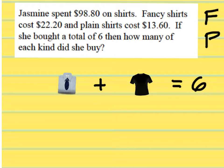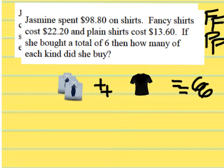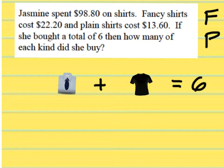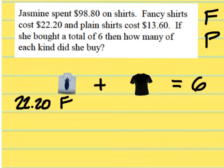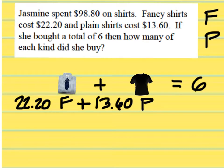So F plus P equals 6. Now we get into the cost. Fancy shirts cost $22.20, so $22.20F. We are going to add that with the cost multiplied by the number of plain shirts — a plain shirt is $13.60, giving us $13.60P. The total that she spent on shirts altogether is $98.80. So our second equation is $22.20F plus $13.60P equals $98.80.